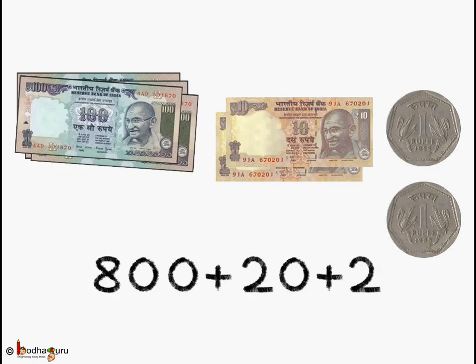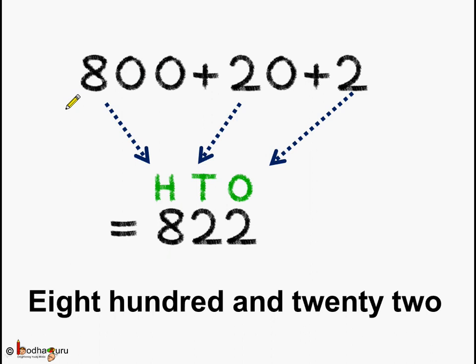Now coming to the next problem. See? There are 8 notes of 100, 2 notes of 10 and 2 rupee coin. So let's convert it to the standard form. 800 plus 20 plus 2.